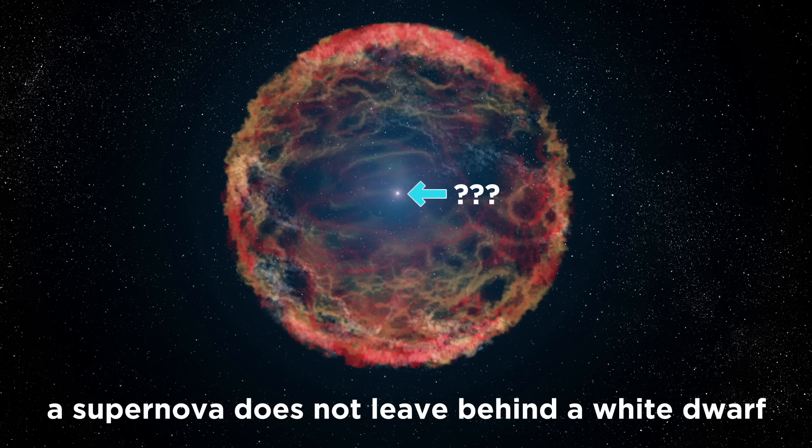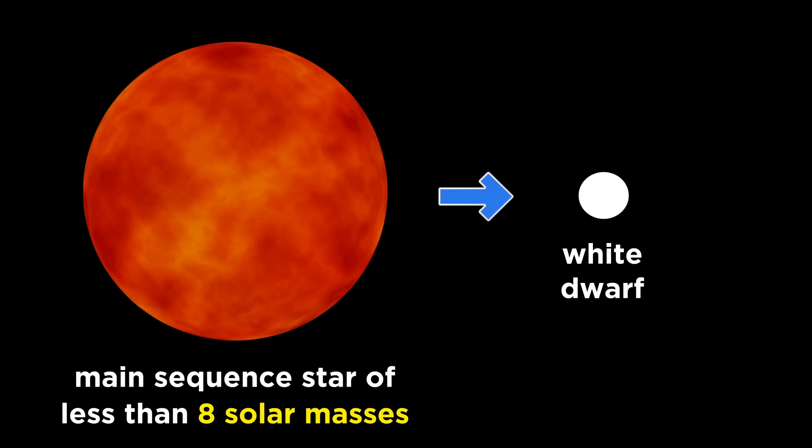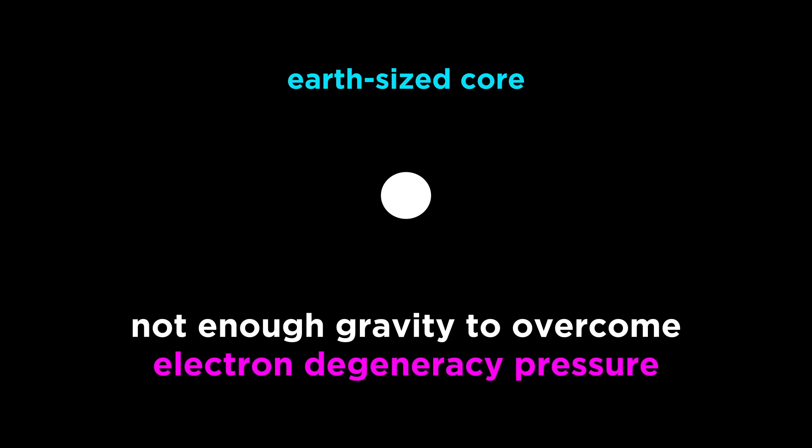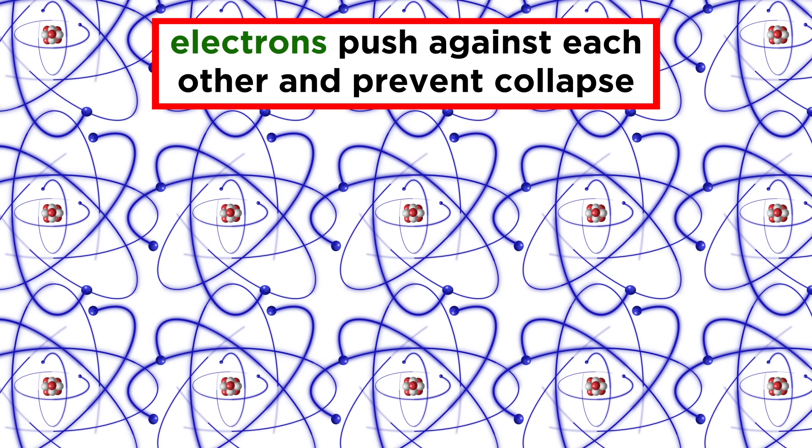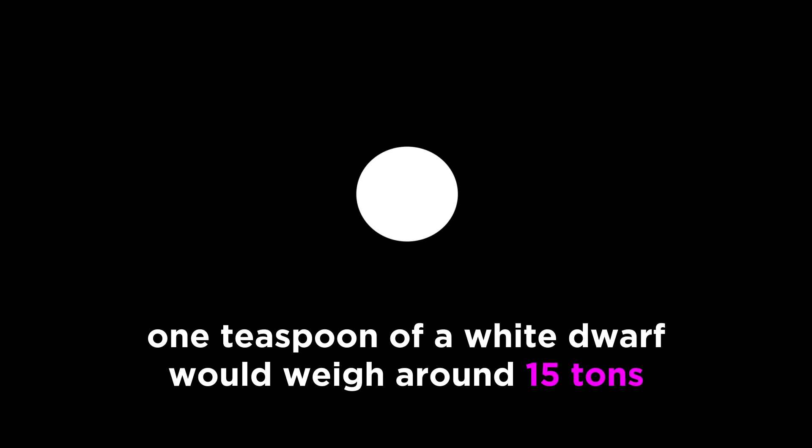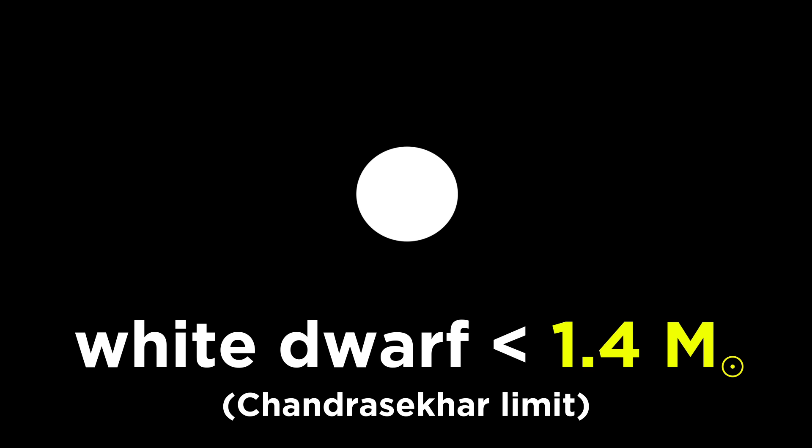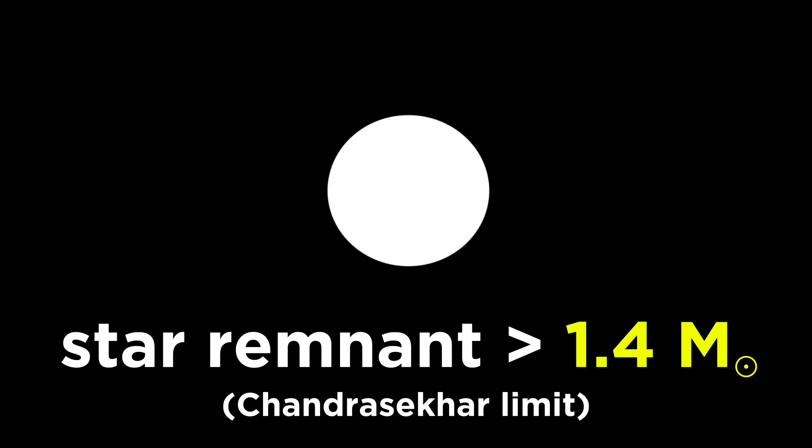Now, a supernova does not leave behind a white dwarf. Lower mass stars that begin with less than about eight solar masses leave behind white dwarfs, because once reduced to its lighter earth-sized core, there is not enough gravity to overcome electron degeneracy pressure. In other words, a white dwarf will become kind of like one gigantic metallic solid, with the electron clouds around the nuclei pushing against each other and preventing further collapse. Even still, this object is very dense, with one teaspoon weighing around fifteen tons. So below around 1.4 solar masses, the maximum mass of a white dwarf, which is also known as the Chandrasekhar limit, this is the fate of the core of a star.